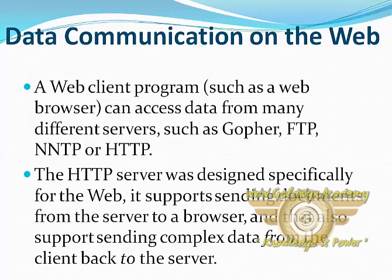Now we see data communication on the web and CGI. A web client program, such as a web browser, can access data from many different servers such as Gopher, FTP, NNTP, or HTTP. The HTTP server was designed specially for the web. It supports sending documents from the server to a browser and can also support sending complex data from the client back to the server.